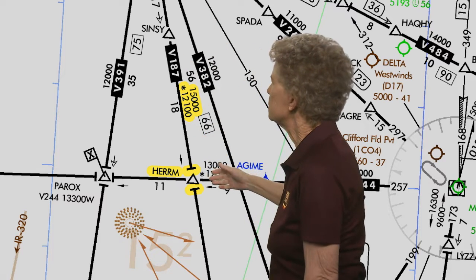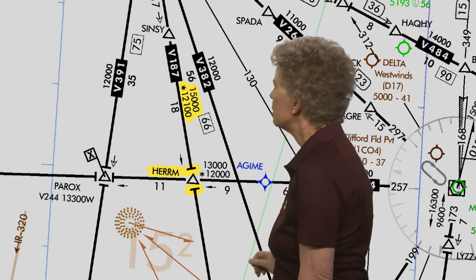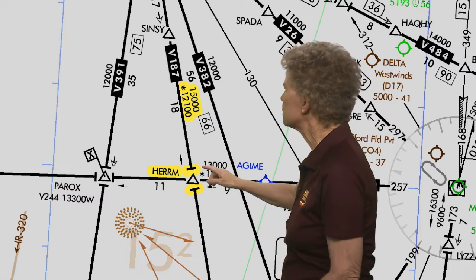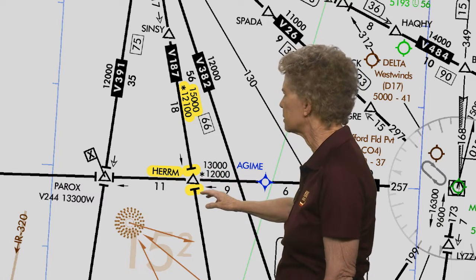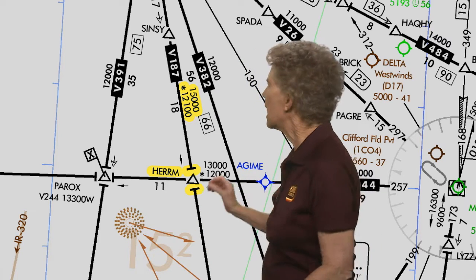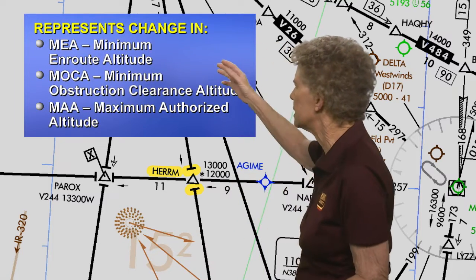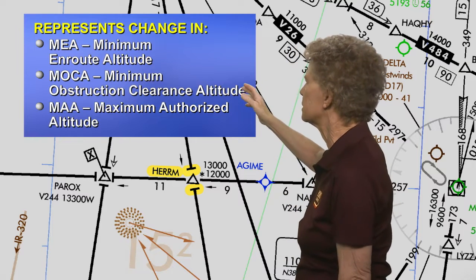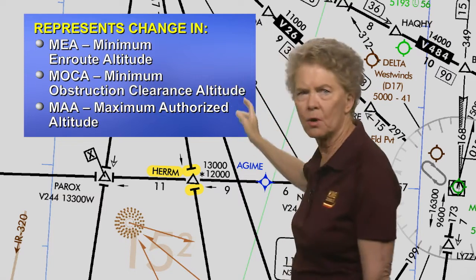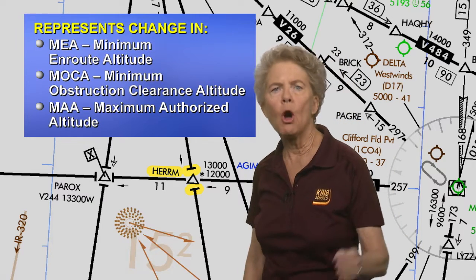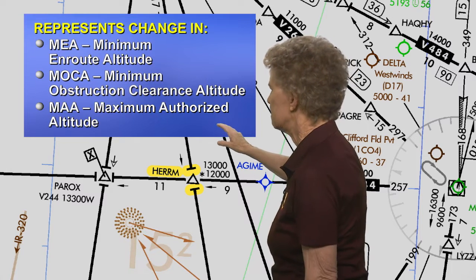As you go a little bit more to the south on that airway, notice that you get to an intersection called Herm. Notice that there are little — what I call dinner plates or fence posts — across the airway on either side of Herm intersection. That is an altitude change point, signaling that you have a change in the charted altitude at that intersection: either the minimum en route altitude (MEA), the minimum obstruction clearance altitude (MOCA) — that's the one with the asterisk — or the maximum authorized altitude called the MAA.